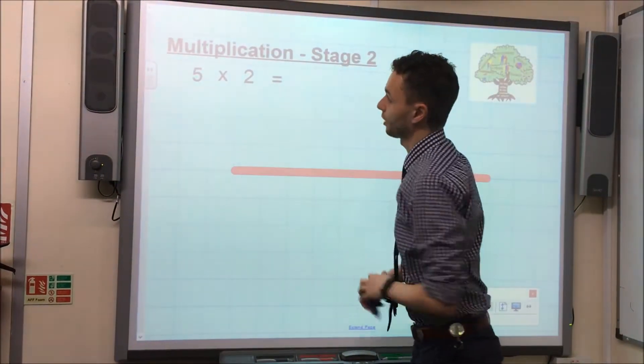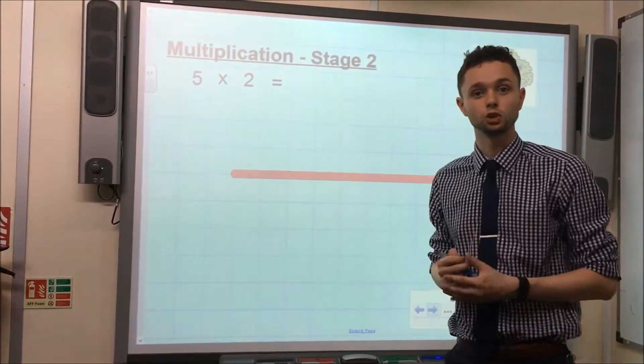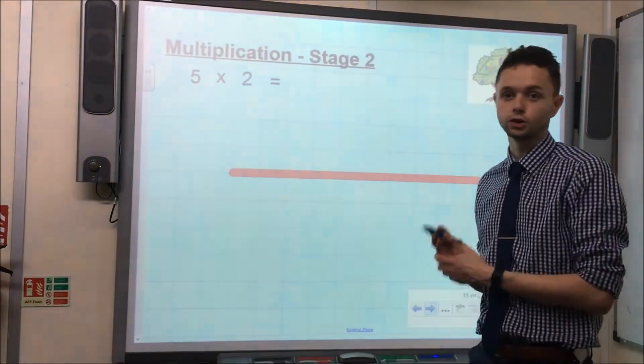The first number in this calculation, 5 times 2, tells us how many jumps we need to make. So we need to make 5 jumps.